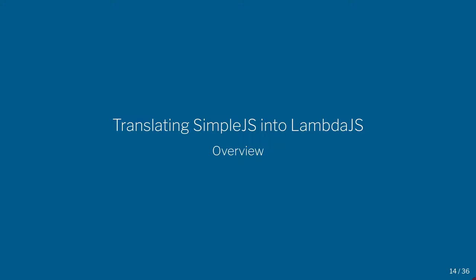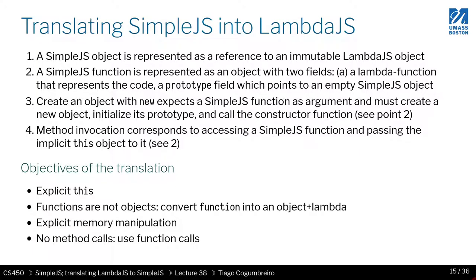We're now ready to learn how to translate simple.js into lambda.js. The basic idea is that in simple.js, an object is represented as a reference — specifically, a reference to an immutable object.